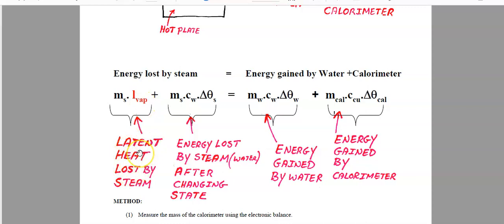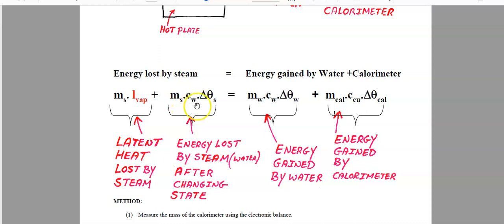This is the latent heat lost by the steam when it changes from steam back into water. However, this is the part that confuses people. When the steam condenses back into water, when that change of state occurs, there's no change of temperature. So when the steam has condensed back into water, that water will be at 100 degrees Celsius in the cold calorimeter, so it will lose even more energy. This additional energy is: mass of steam (now water, same mass) × specific heat capacity of water × change of temperature of the steam. So the steam loses its latent heat, but it also loses another chunk of energy after changing state.